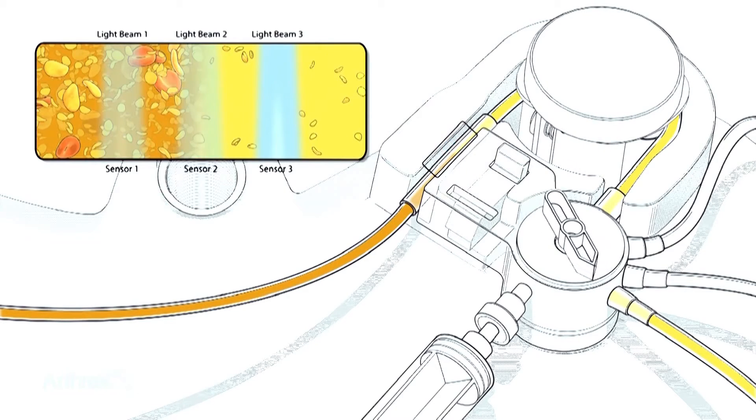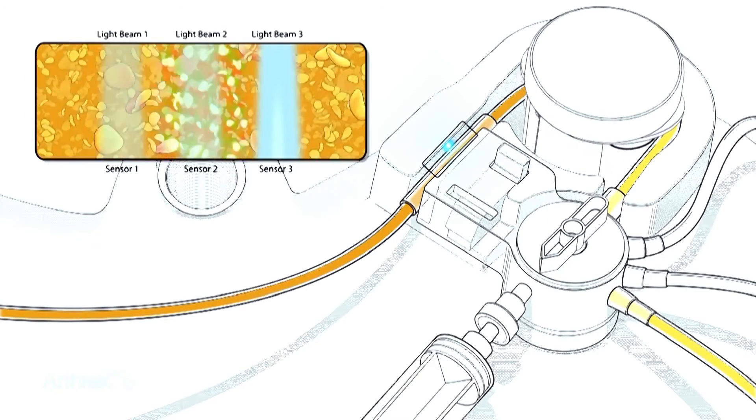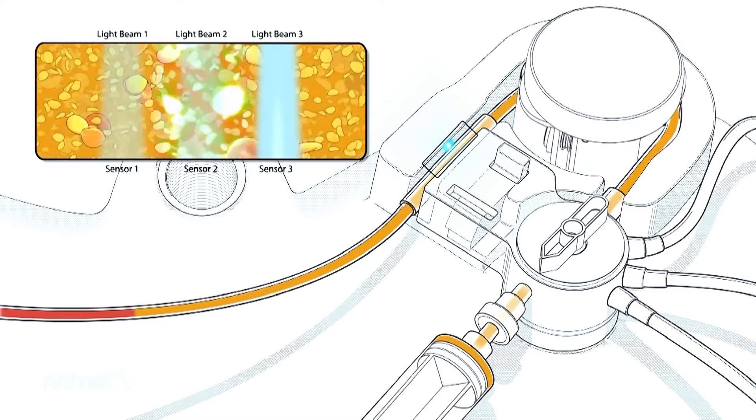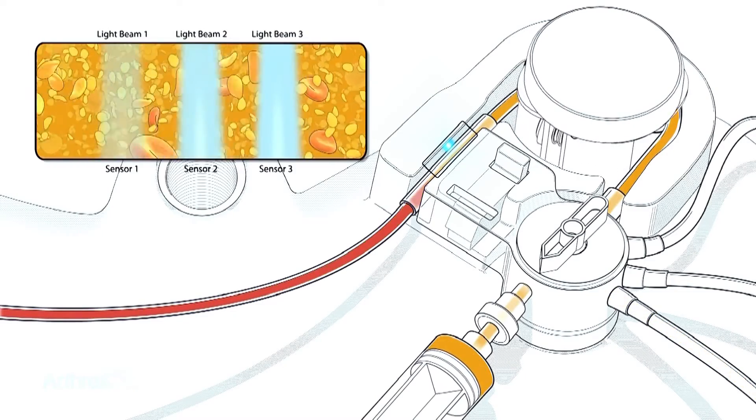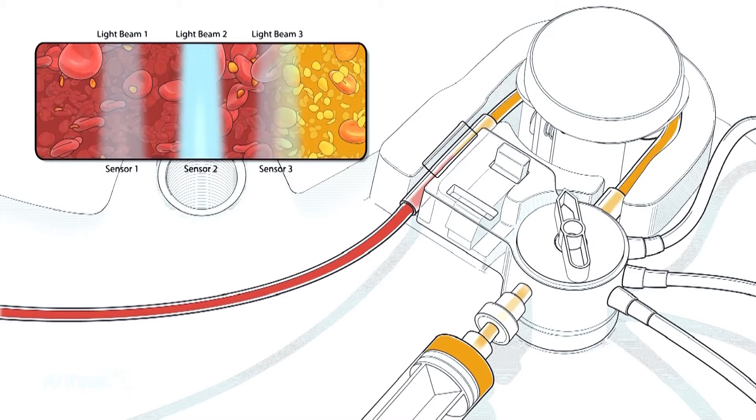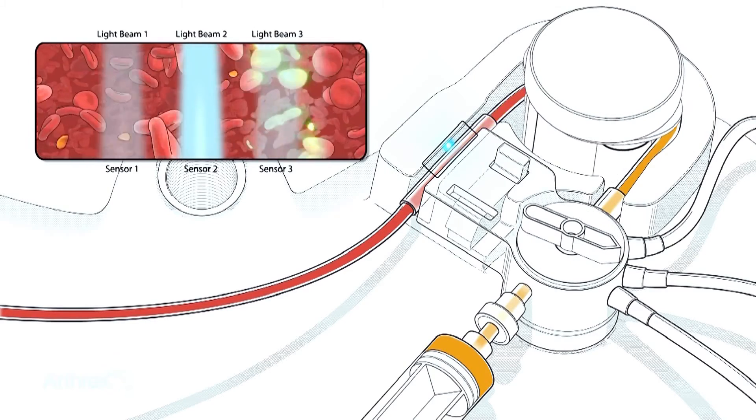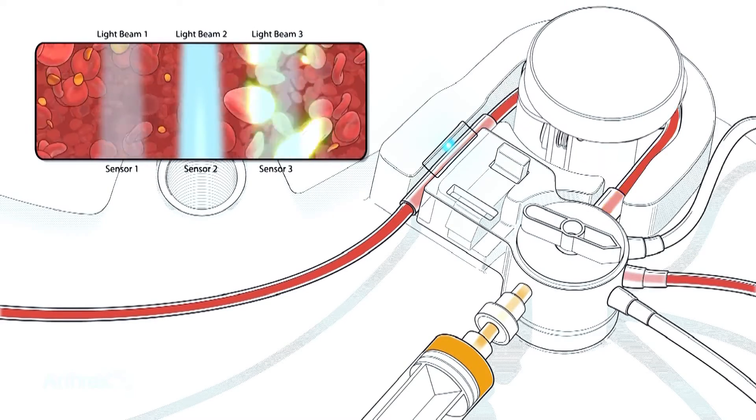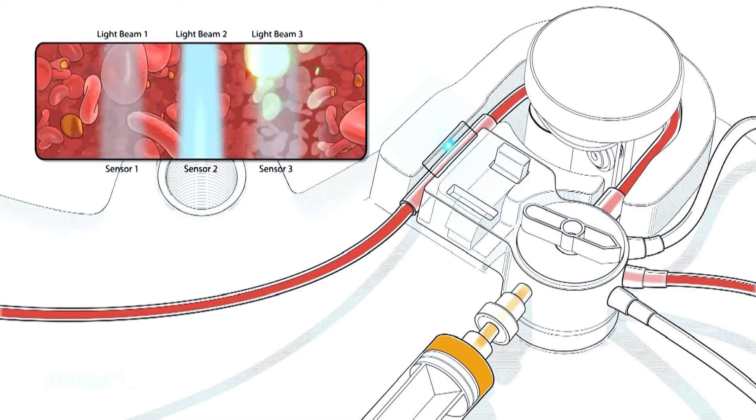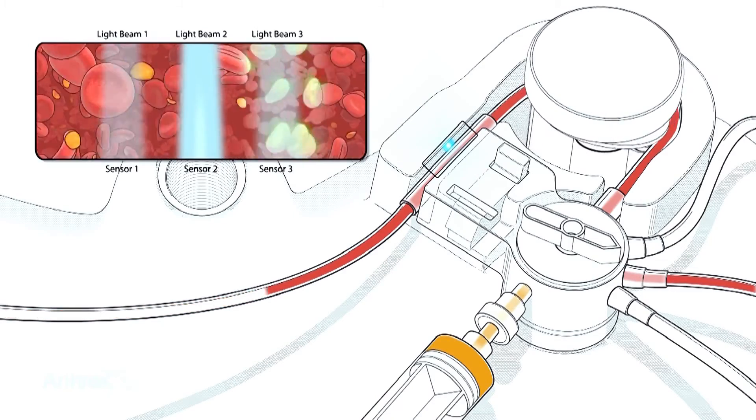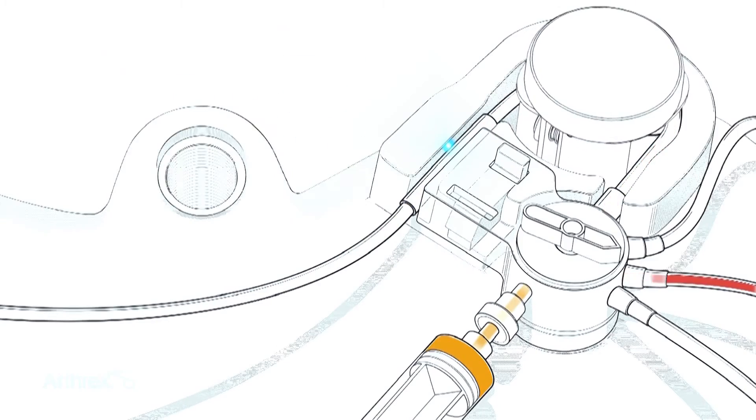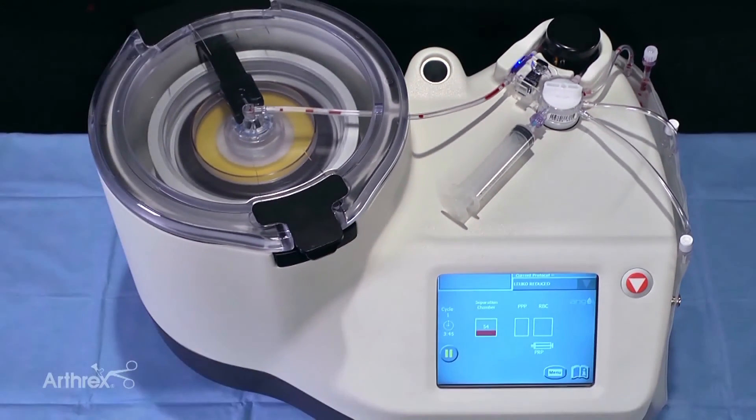Next is the platelet rich plasma. When the presence of platelets is detected by the 470 nanometer light beam, the valve is adjusted to direct the PRP into the collection syringe. PRP collection will continue until the 930 nanometer light beam detects red blood cells. Again, the Angel automatically adjusts the valve position to direct the red blood cells into the RBC out compartment.